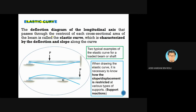The deflection diagram of the longitudinal axis that passes through the centroid of each cross-sectional area of the beam is called the elastic curve, which is characterized by deflection and slope along the curve. But mainly it describes the deflected shape.